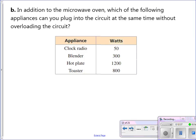Letter B, in addition to the microwave oven, which of the following appliances can you plug into the circuit at the same time without overloading the circuit? So, remember, what we can plug in, our watts have to be less than or equal to 700 in order to stay under that maximum wattage. So, we could plug in the clock radio, the blender, and then the hot plate, well, that's 1,200 watts. That would overload the circuit, so we can't plug in that. And the toaster is just barely over 700 watts. It's 800 watts. So, that would overload the circuit as well if we use it at the same time as the microwave. So, the clock radio or the blender are allowed without overloading the circuit.